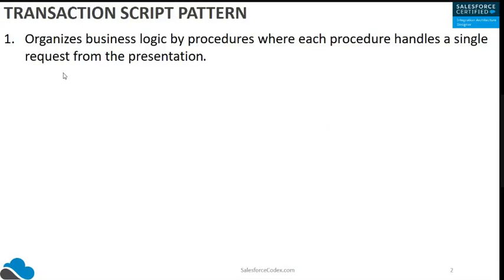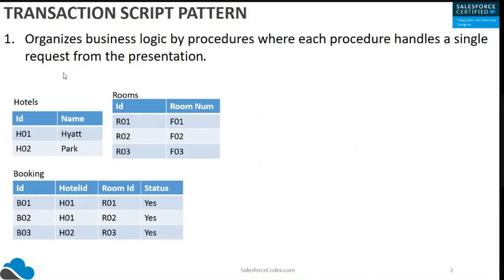Let's see an example. One of your clients has a hotel business and they already have a service offering. What they want is for their hotel customers to be able to book conference rooms. For that they need a customer portal. As a minimum requirement, we need a Hotel object, a Rooms object, and a Booking object.